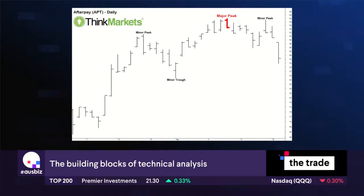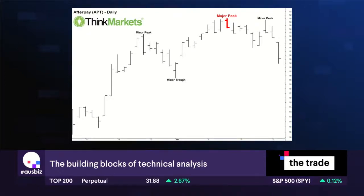We might hit a minor peak and stay there for a couple of days and get through, but we'll have far more trouble getting through a major peak because there are relatively more people in at those levels trying to get out. Let's go to the next chart.